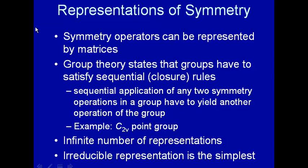So far in our study of symmetry, we've learned about the five elements of point group symmetry: the identity element, inversion, rotation, reflection, and improper rotation, which is a combination of rotation and reflection. Here we're going to continue our study of symmetry and now abstract ourselves from molecules. We first started talking about the symmetry of molecules, but now we're going to become more abstract and talk just about symmetry itself the way a mathematician would.